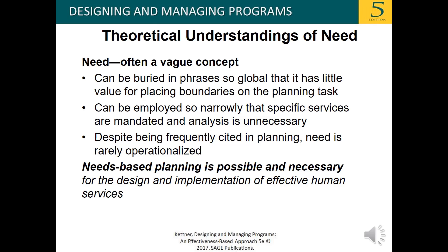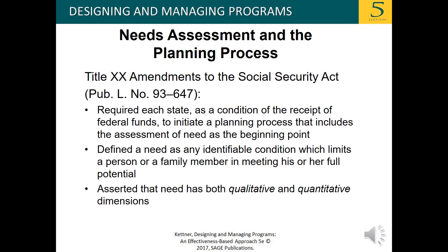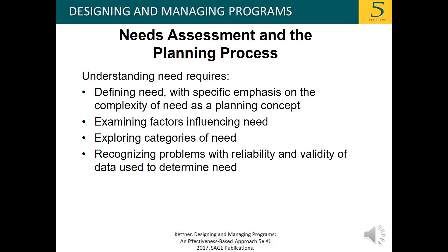Needs-based planning is possible and necessary for the design and implementation of effective human services. Problems must be translated into needs that will be addressed through the planning process. Need is not only difficult to define as a concept, but once defined, difficult to measure. Title 20 Amendments to the Social Security Act required each state, as a condition of receiving federal funds, to initiate a planning process that includes assessment of need as the beginning point, defined need as any identifiable condition which limits a person or family member in meeting his or her full potential, and asserted that need has both qualitative and quantitative dimensions. Understanding need requires defining it with specific emphasis on its complexity as a planning concept, examining factors influencing need, exploring categories of need, and recognizing problems with reliability and validity of data used to determine need.